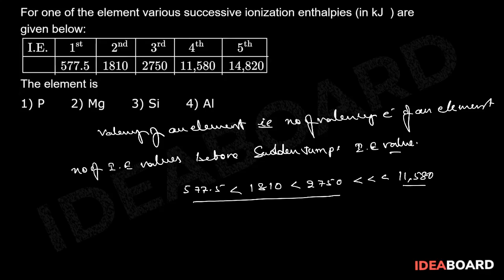First, second, third ionization. So for the given element, the valence electrons are 3.